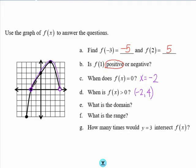For part E, we want to know the domain. When we ask for the domain, we are asking how far to the left and how far to the right the graph goes. On the left the graph goes to negative 3, and on the right it goes to positive 4. Since we have a closed circle on the left I'll use a square bracket, and since we have an open circle on the right I'll use a parenthesis. The domain is [-3, 4).